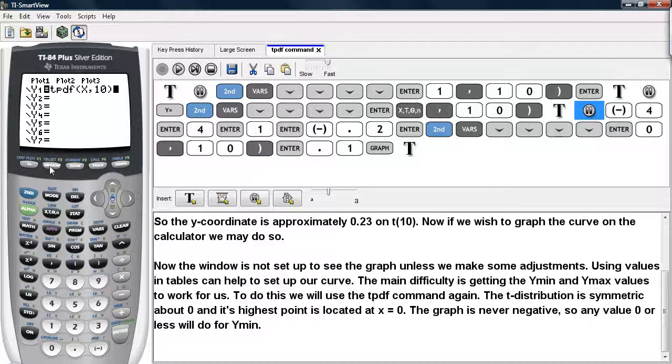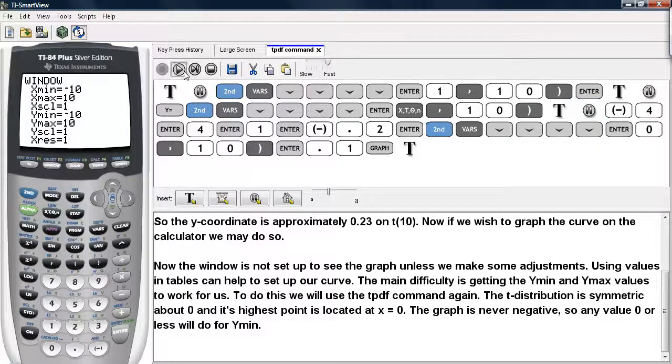So, we're going to go ahead and hit window, and we'll go ahead and type in our x-min, negative 4, x-max at 4, and the scaling will keep at 1.